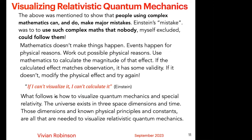And then finally, I have Einstein's quote: if I can't visualize it, I can't calculate it. So what follows is how to visualize quantum mechanics and special relativity. The universe exists in three space dimensions and time. Those dimensions and known physical principles and constants are all that are needed to visualize relativistic quantum mechanics.